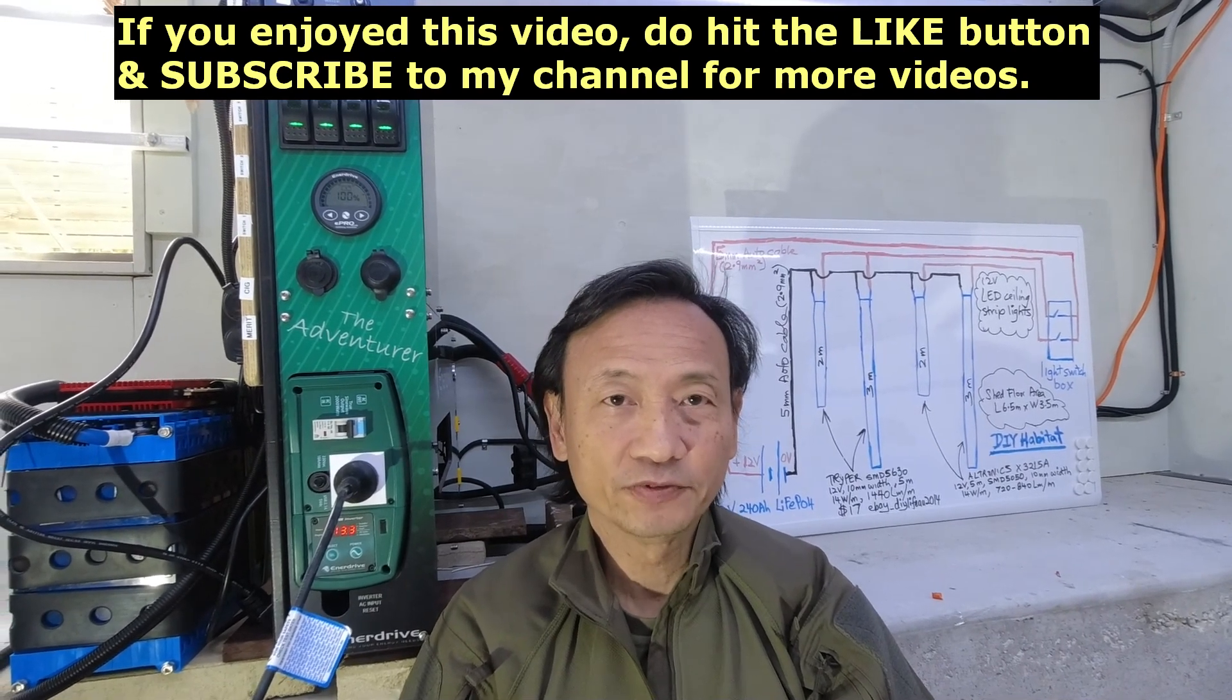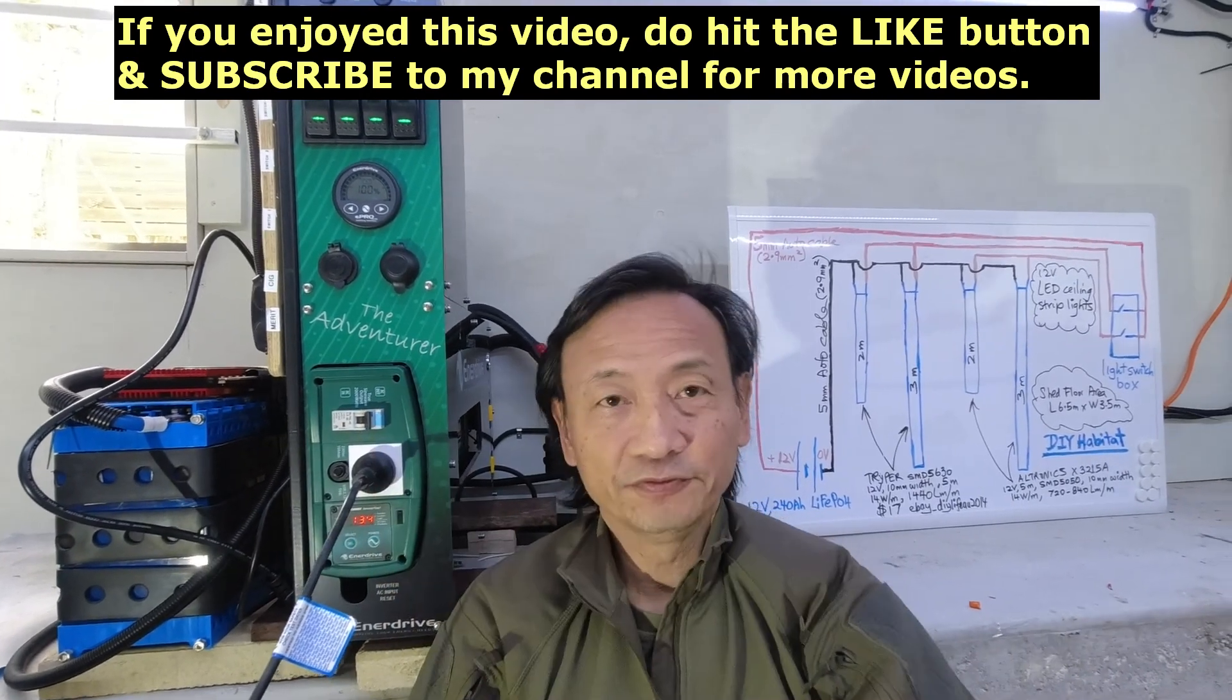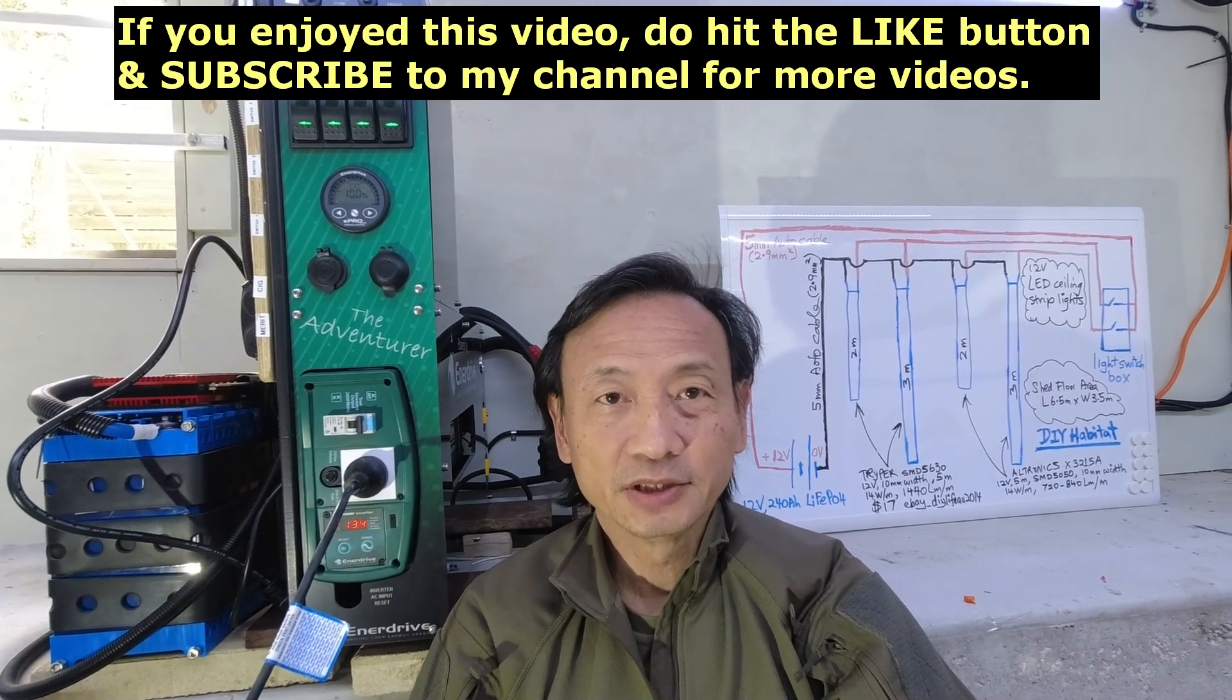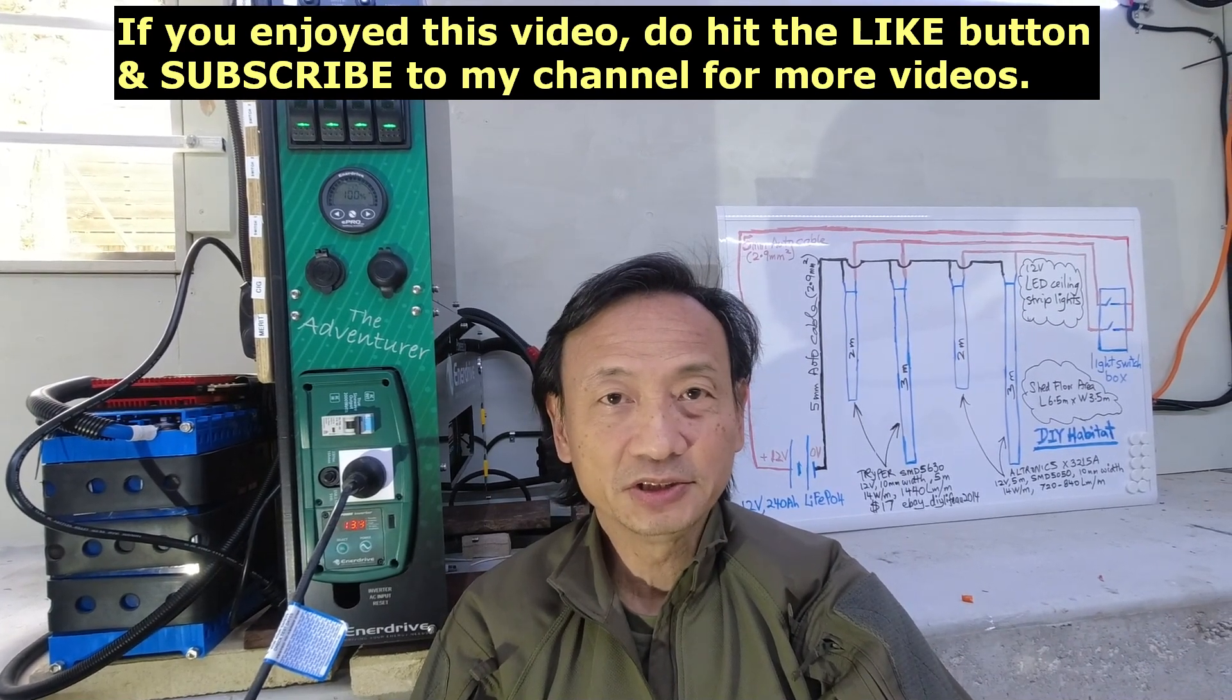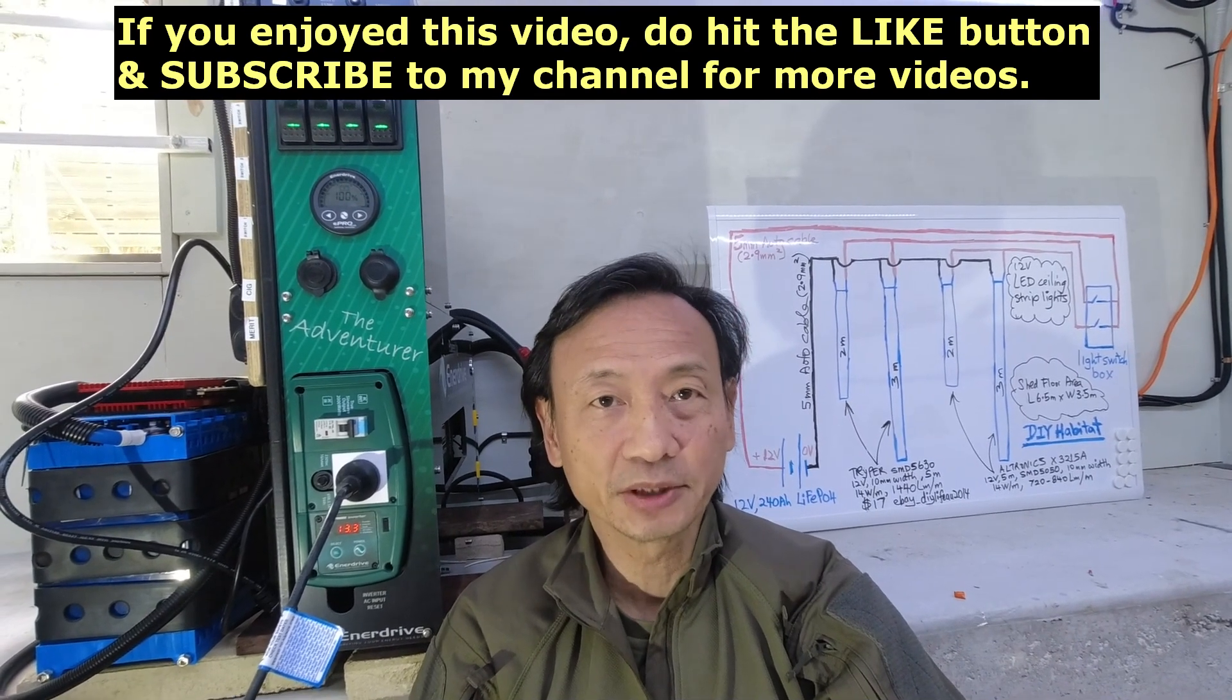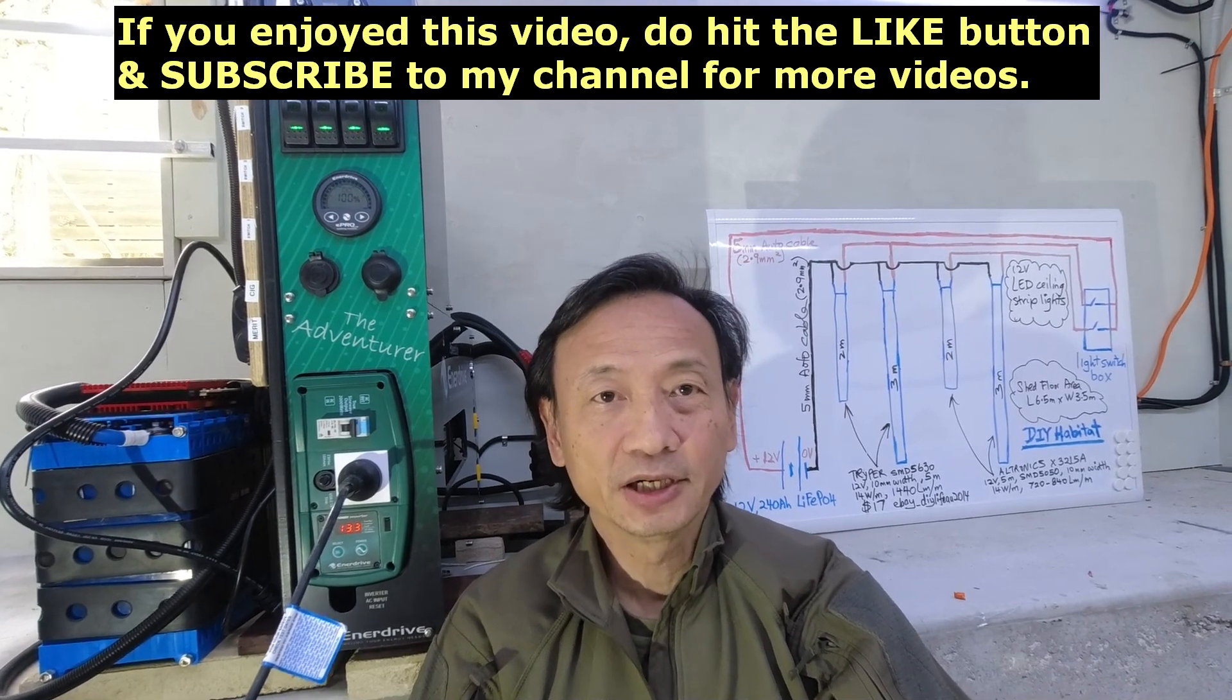On this Enerdrive Adventurer system, which includes a solar panel, AC DC, DC DC charging and inverter, and explain my choices in coming up with this product as well as the Tento solar panel. See you next time.